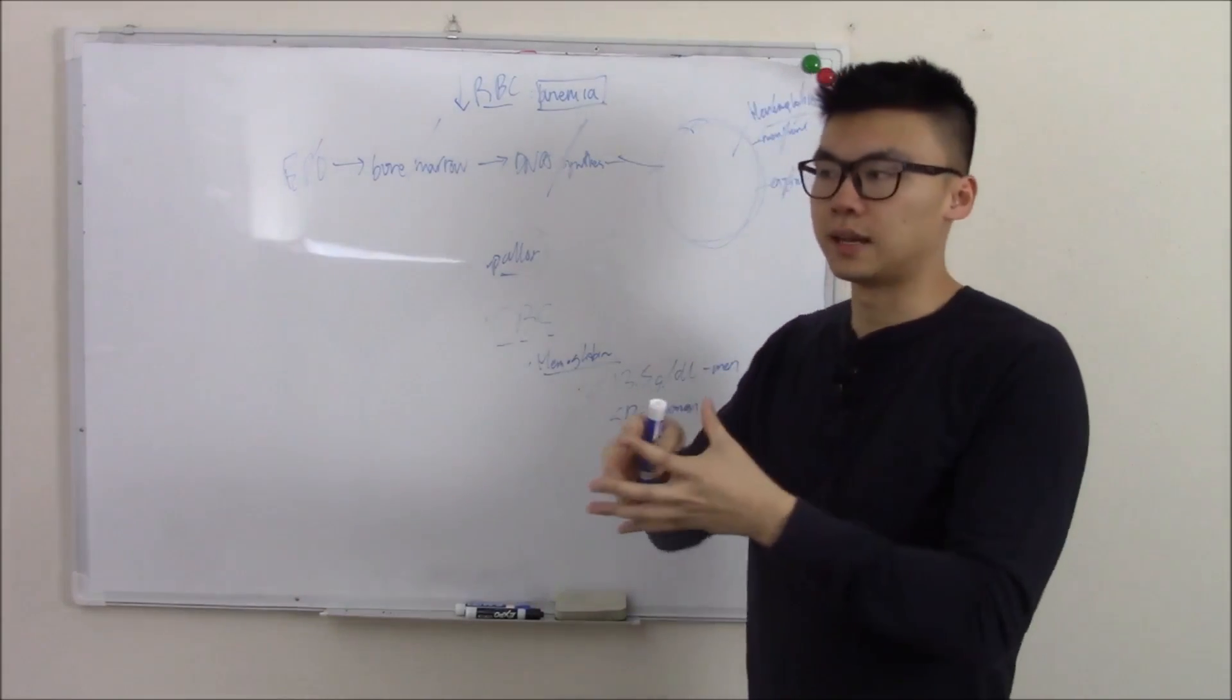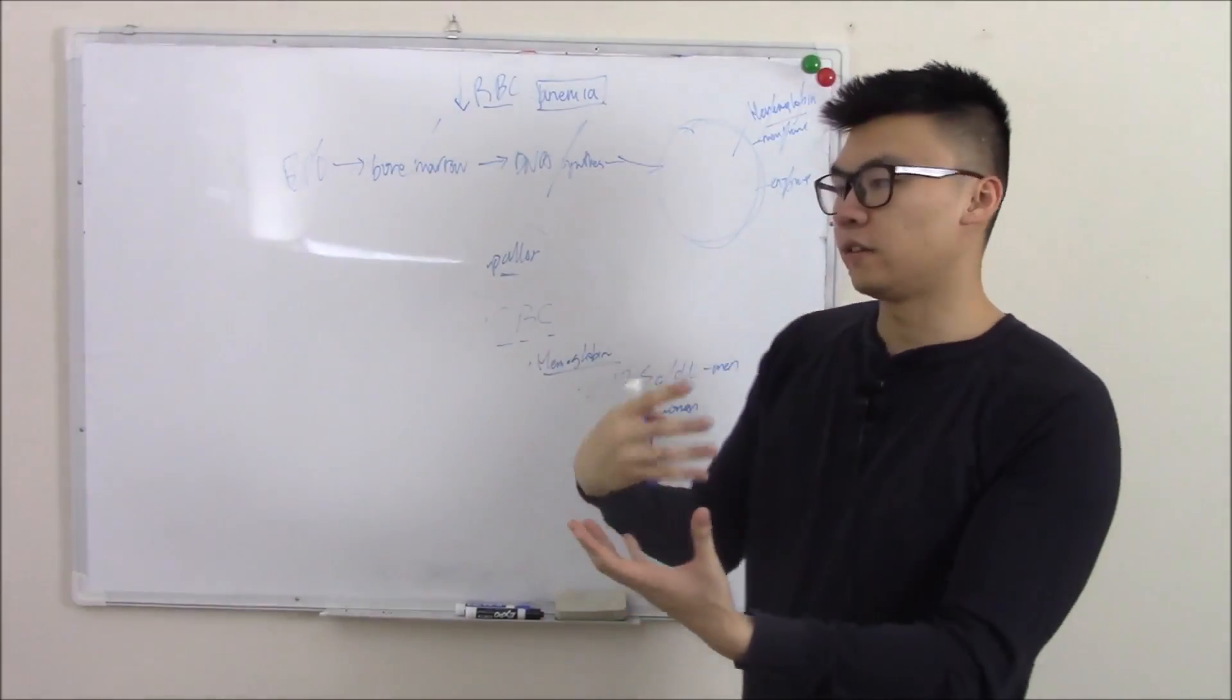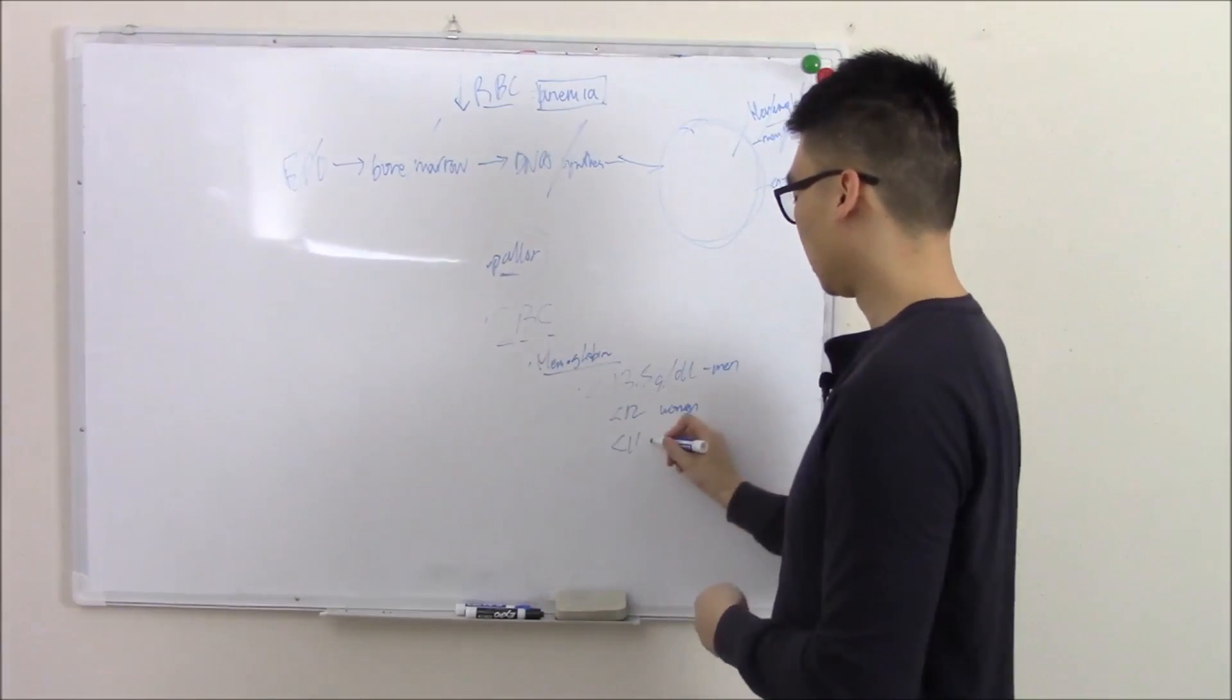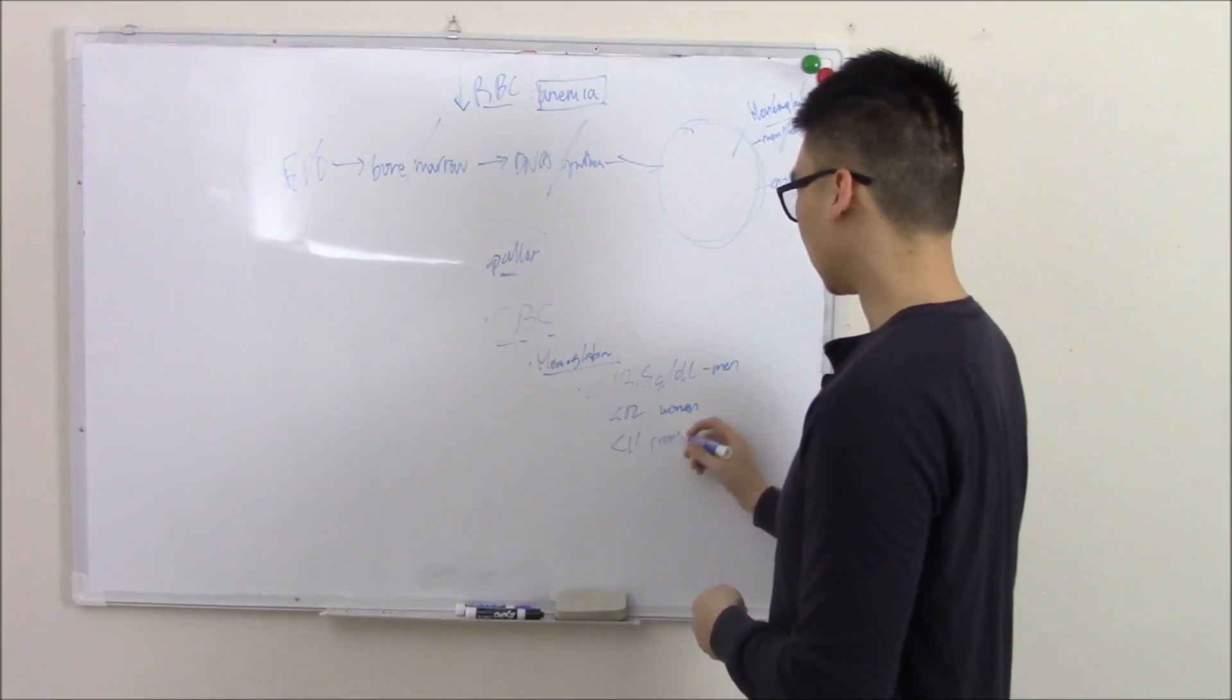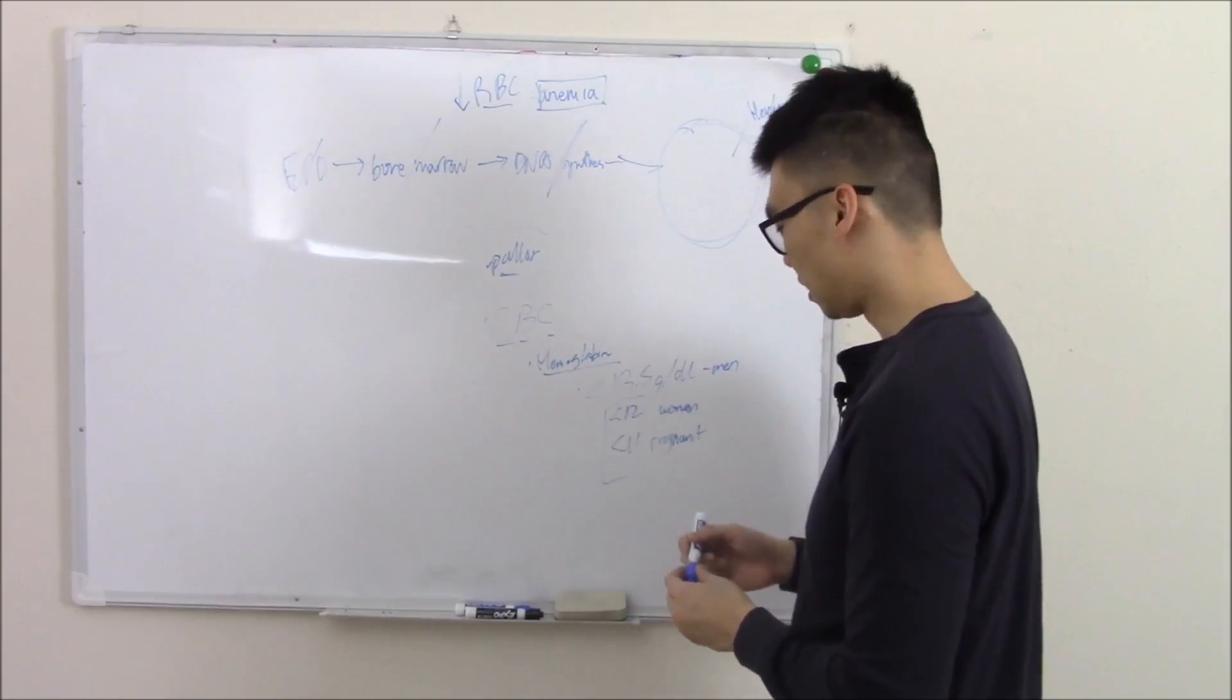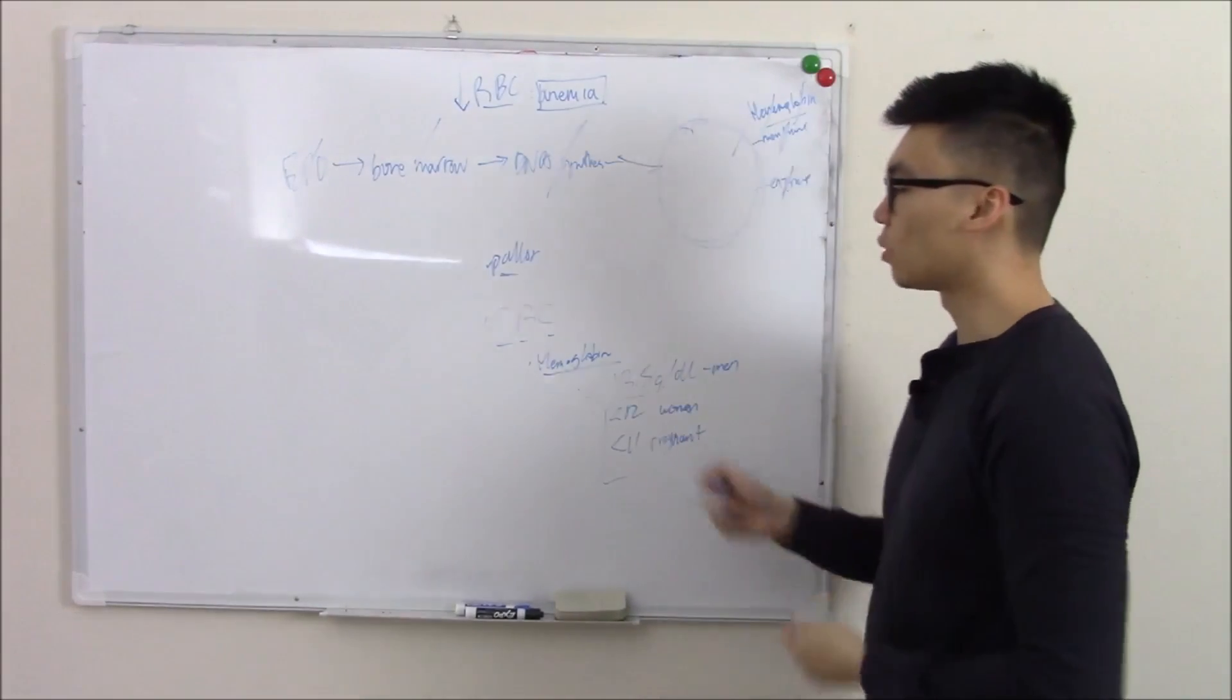you increase fluid and plasma volume and that basically dilutes your red blood cells and basically gives you physiological anemia. And so we put the limit a little bit lower because it's somewhat physiological and we don't want to diagnose everyone with anemia. So those are your values. And that's our best way to screen for anemia.